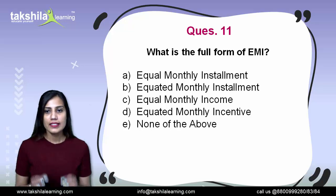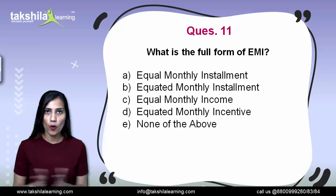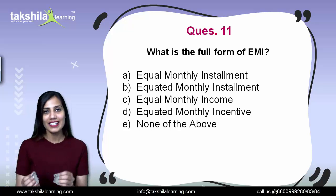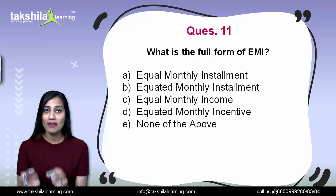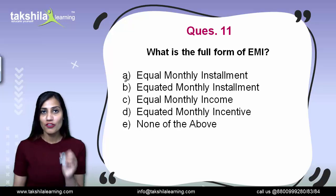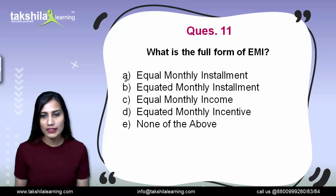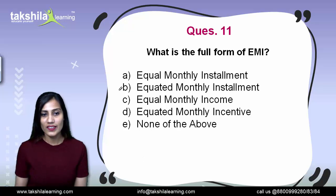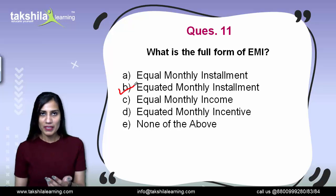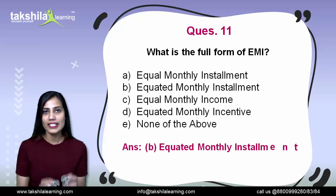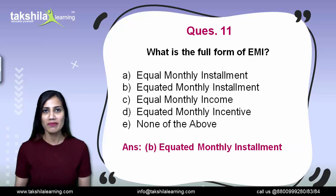Next question: what is the full form of EMI? Almost everyone pays EMIs nowadays, even for phones, but many don't know its full form. Options are equal monthly installment, equated monthly installment, equal monthly income, equated monthly incentive, or none of the above. The correct answer is option B — equated monthly installment. EMI is paid on a monthly basis and the amount is equated, i.e., distributed equally. Hope you won't forget the full form of EMI now.